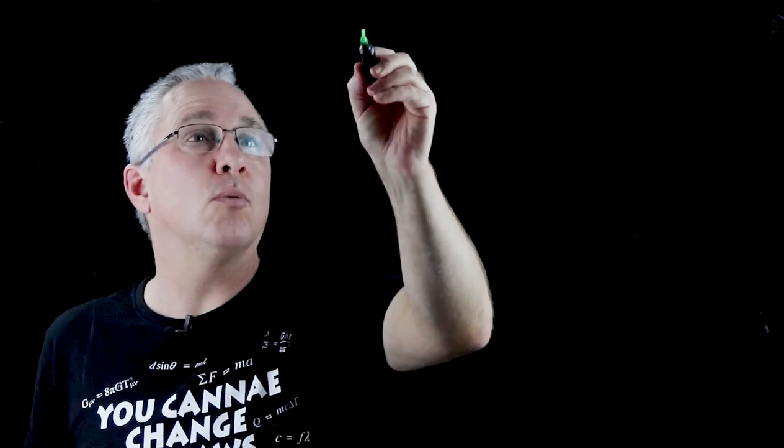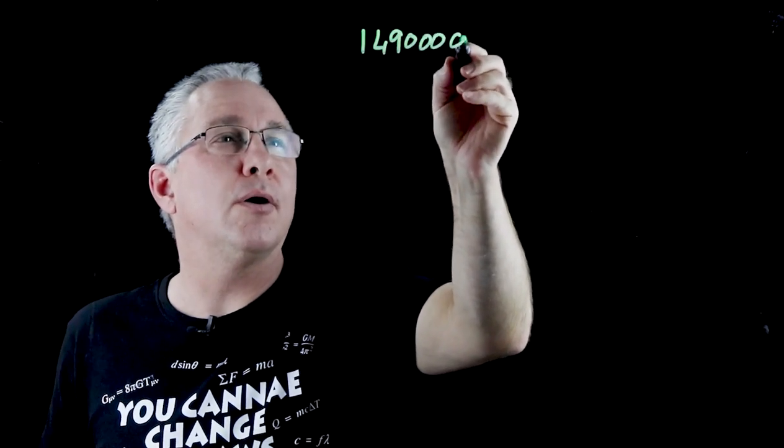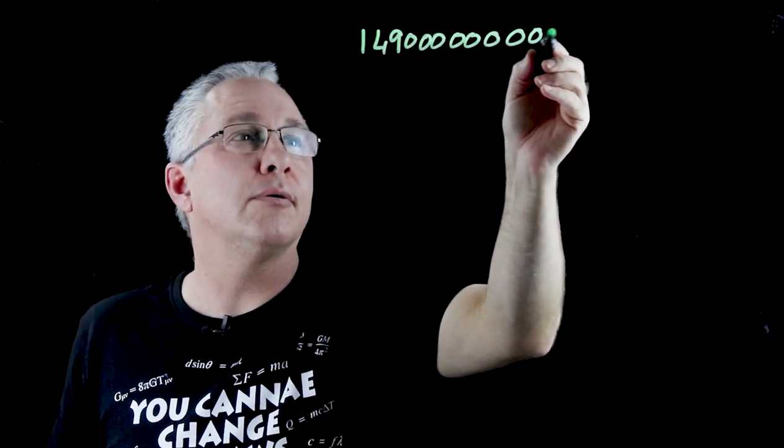Hi, my name is Paul from Physics. Hi! Do you know what the distance is from the Sun to the Earth? Well, it's one astronomical unit, and it is equal to 149,000,000 meters.